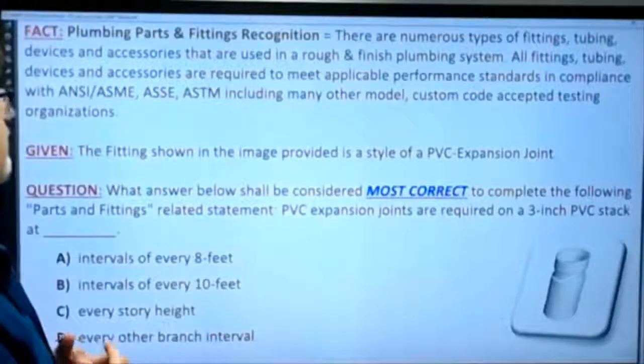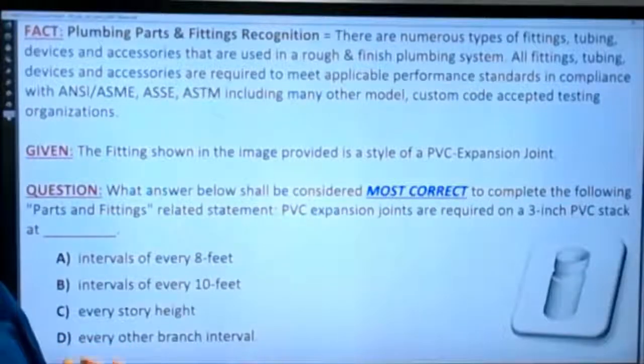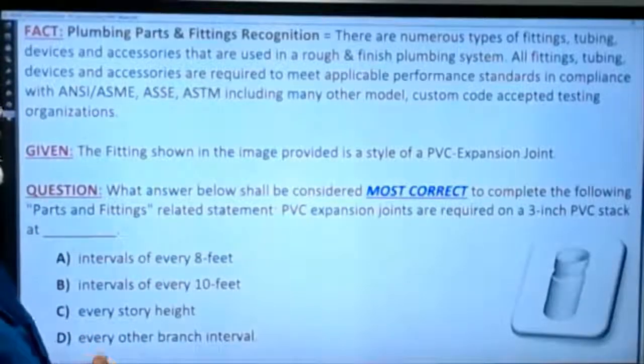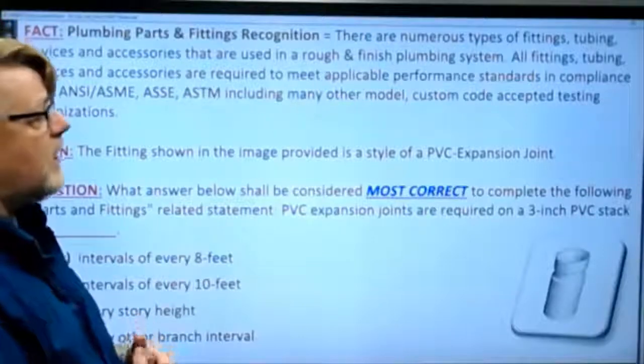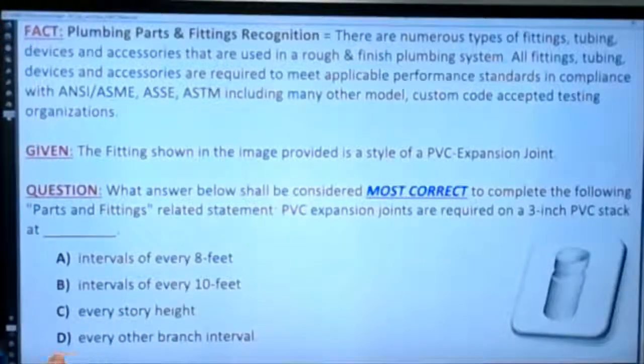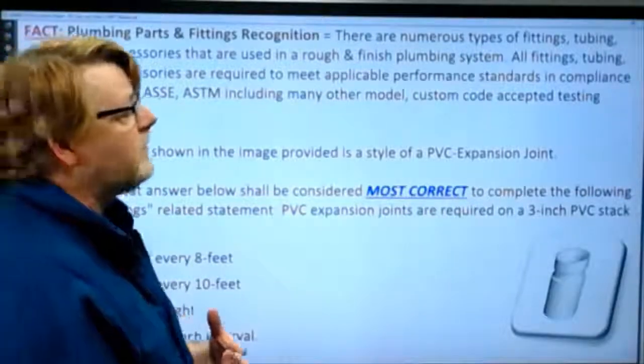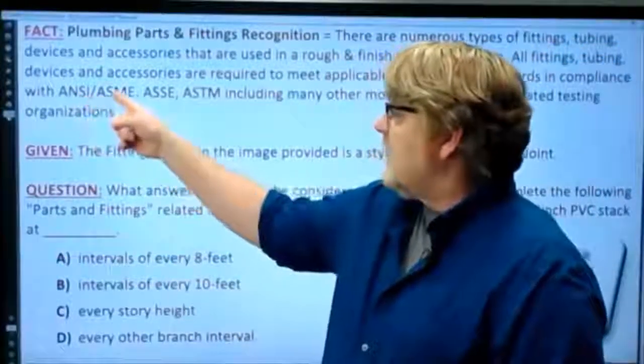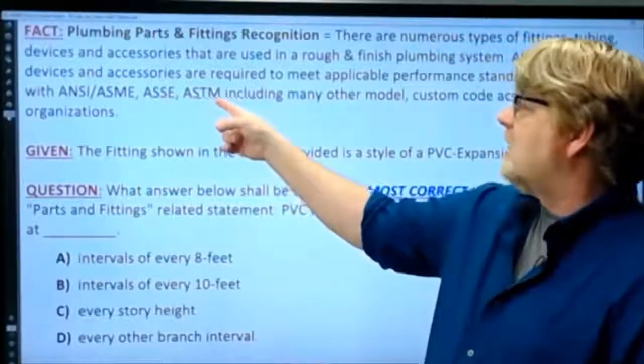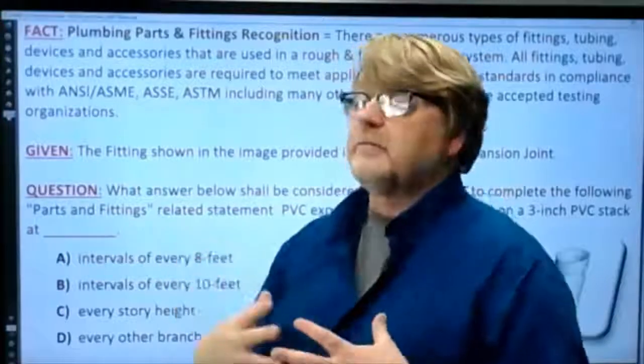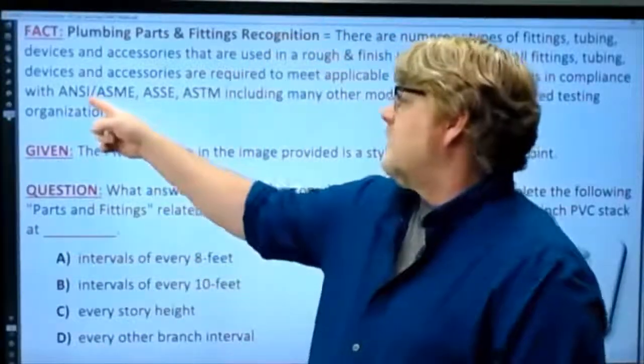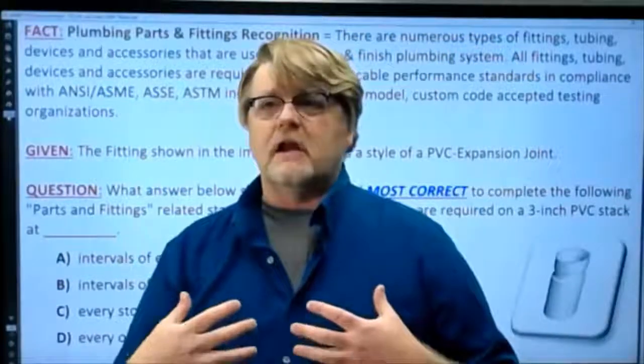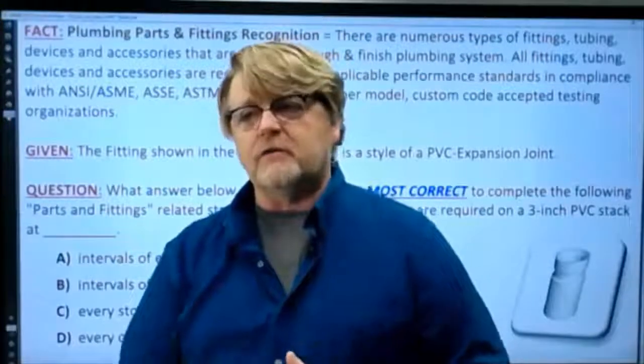We always start out with a fact. In this case, the fact is about plumbing parts and fittings recognition. There are numerous types of fittings, tubing, devices, and accessories used in rough and finished plumbing systems. All fittings, tubing, devices, and accessories are required to meet applicable performance standards in compliance with national standards, particularly ANSI, ASME, ASSE, and ASTM.